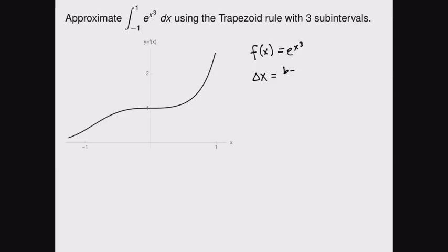Now the usual formula for this is b minus a over n, and so in this case that's 1 minus negative 1 over 3. Be careful with the negative there, which comes out to 2 thirds.